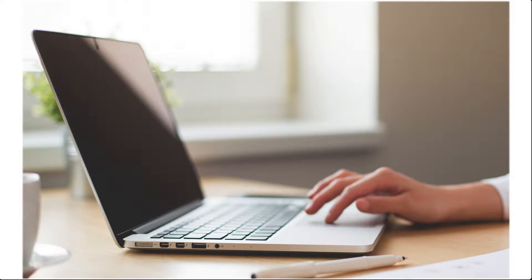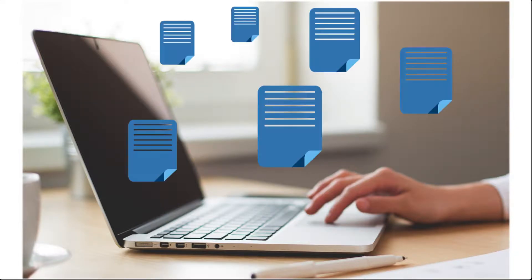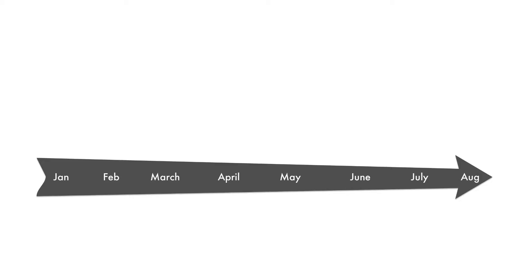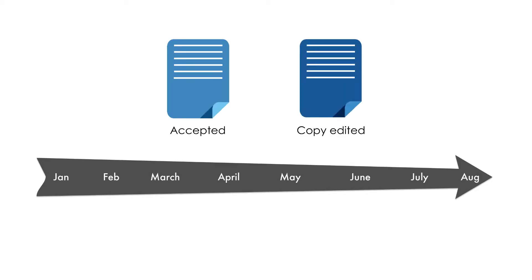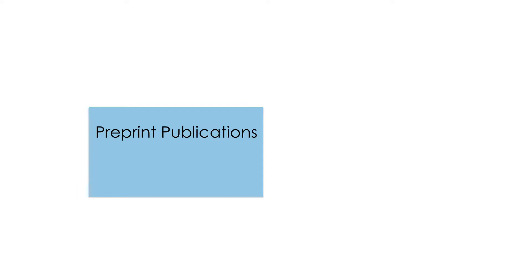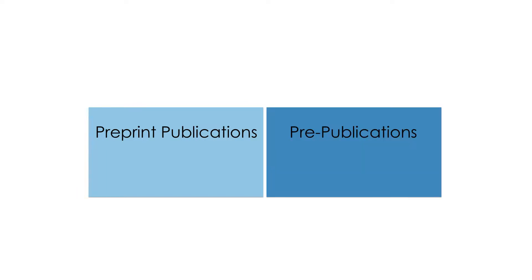To help with the lag time between submission and publication, publishers often post articles online, making them available before they're officially published in print. Some publishers post the articles as soon as they're accepted. Other publishers post them after copy editing, but before pagination is completed. These online articles are often referred to as pre-print publications, pre-publication articles, or simply as pre-pubs.